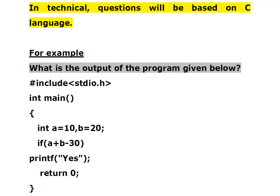For example, in a C program: integer A equals 10 and integer B equals 20. There is an if condition — if A plus B minus 30, then print S. The value of A plus B is 30, so 30 minus 30 equals 0. Since the if condition evaluates to 0, it will not execute or print the value inside the brackets. So in this case, the program will not print anything.